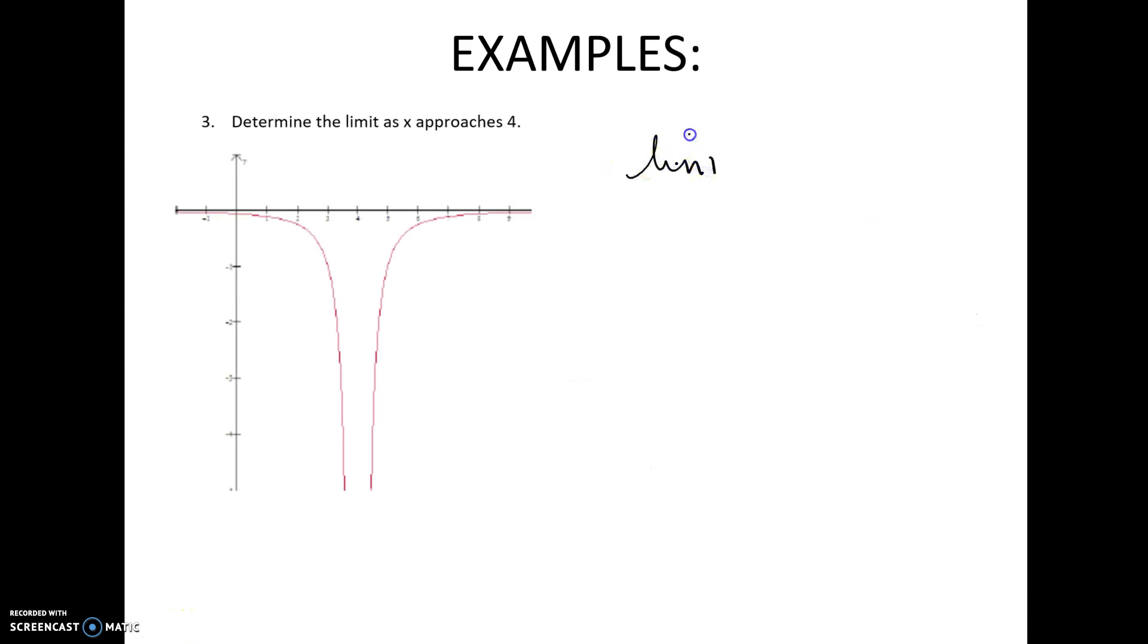For this, now I'm looking at the graph. Limit as x approaches four of this function. So here's x is equal to four. So I'm going to get arbitrarily close to x is equal to four on either side. So four from the right, what are your y values doing? Your y values are decreasing to no end. To the left of four, what are your y values doing? Again, they're decreasing and not approaching a finite value.